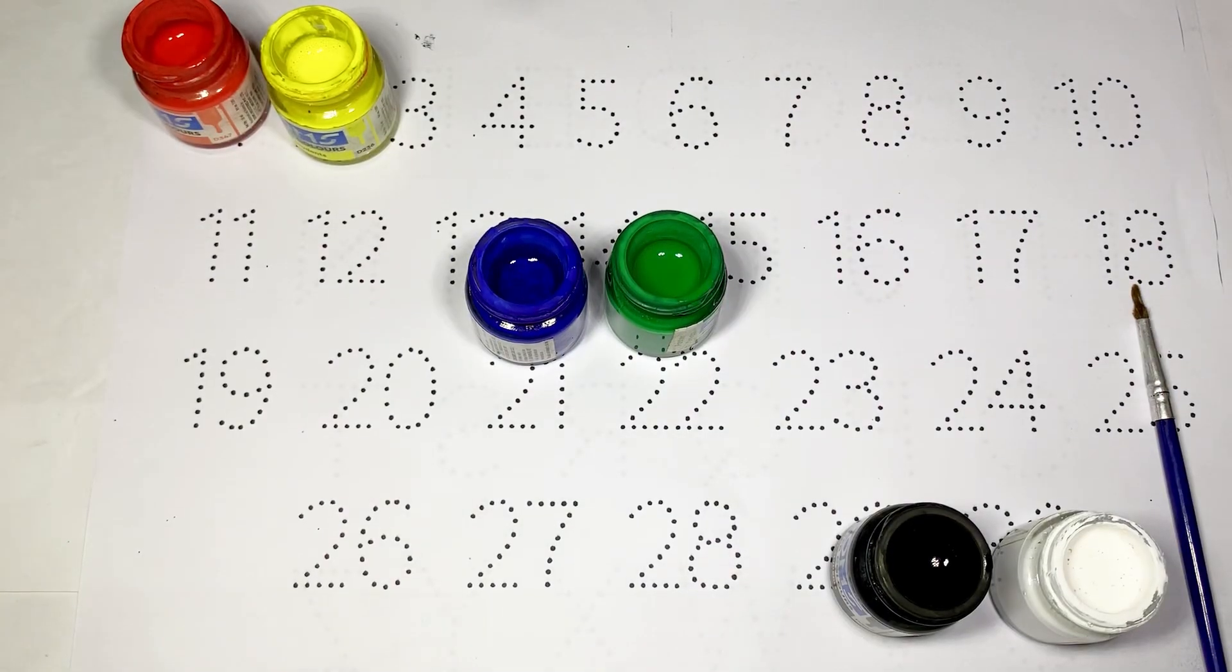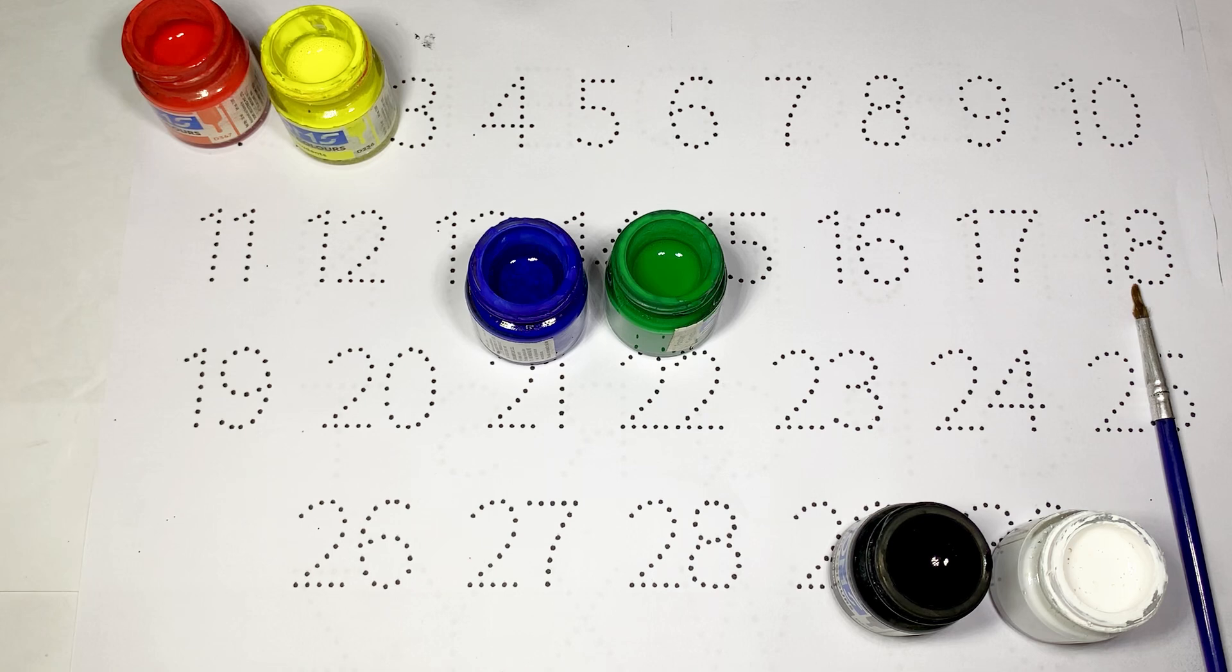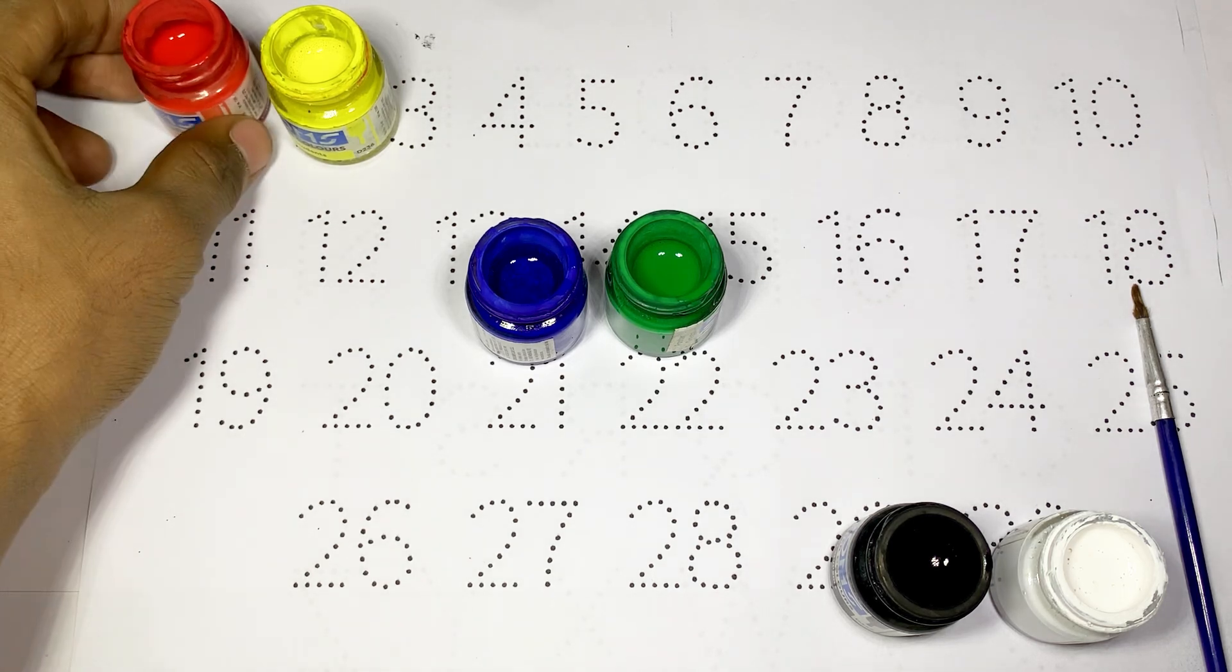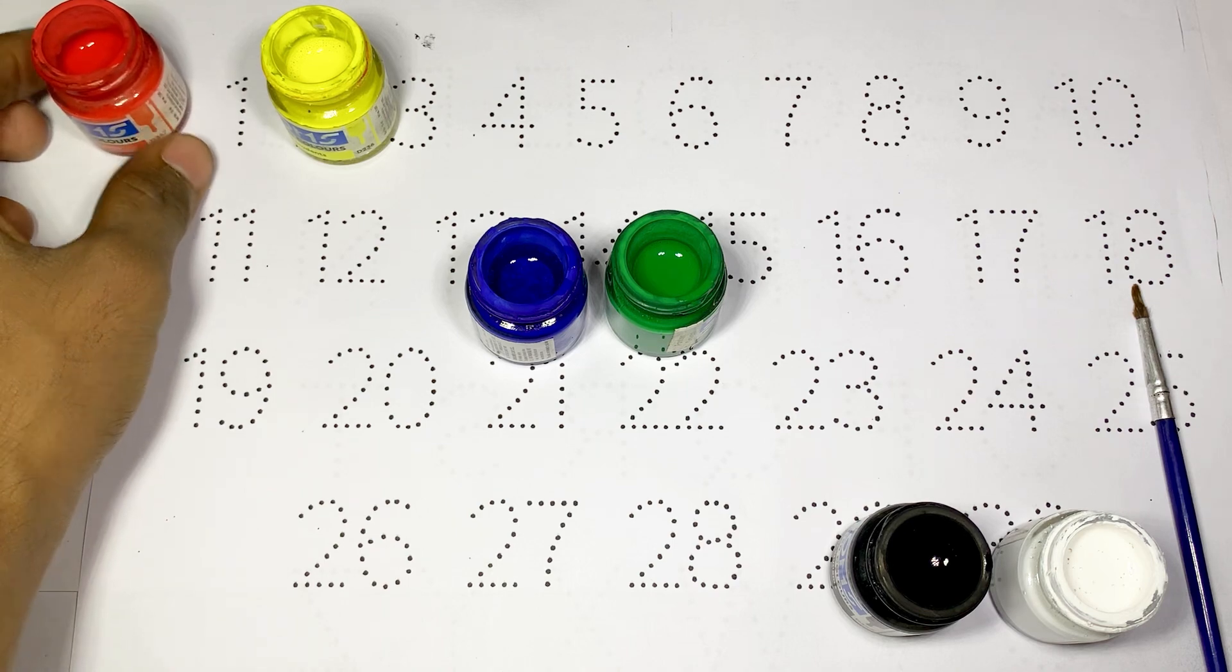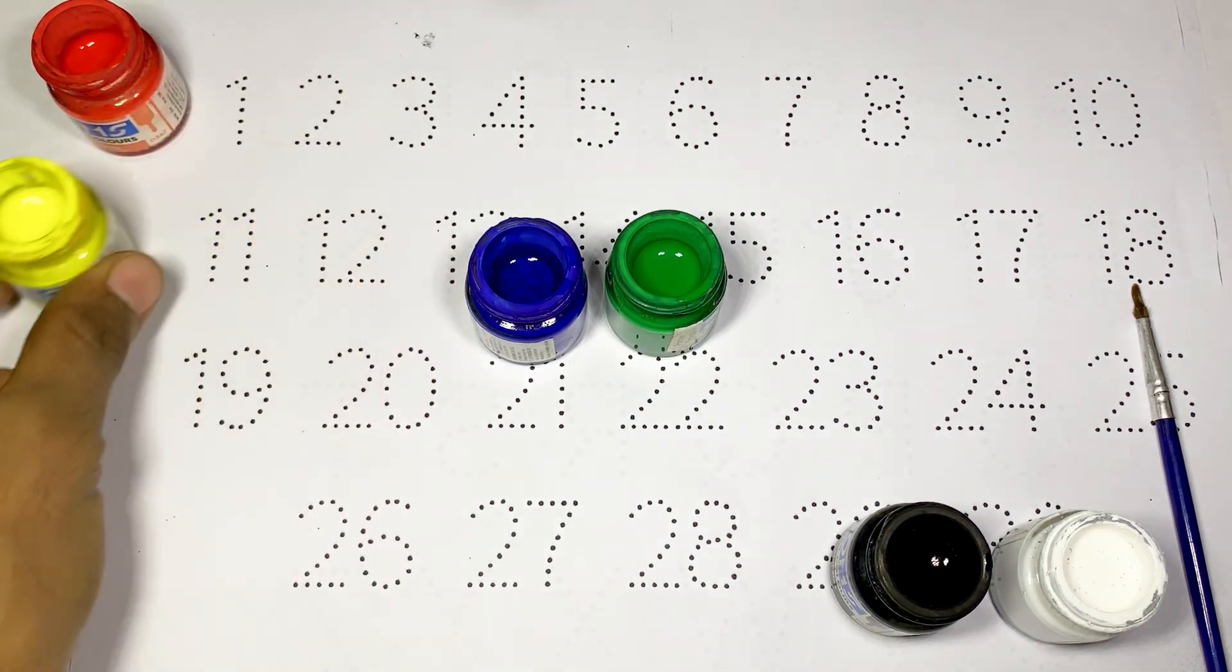Hello kids, welcome back to the channel. Today we'll learn and draw numbers 1 to 30. So kids, let's learn the names of the colors: red color, yellow color